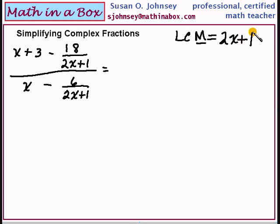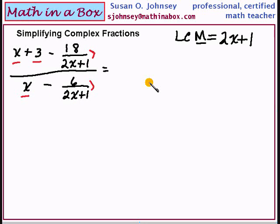We will multiply with the LCM. Each term — the x, the plus 3, and this large term here on the end, the x here, and then this large term here. After all of these, there are five things here that must be multiplied with the 2x plus 1.